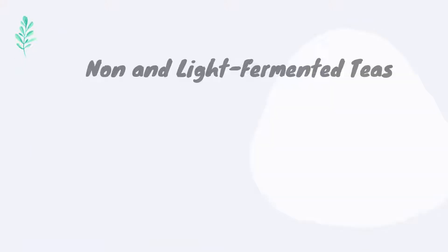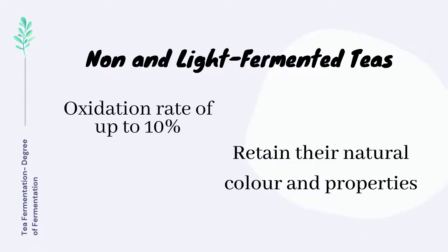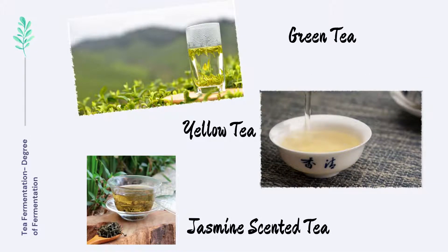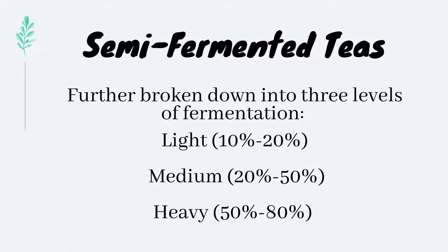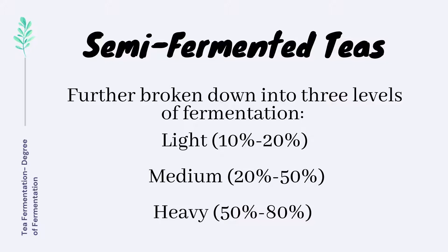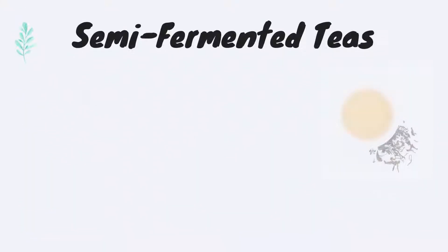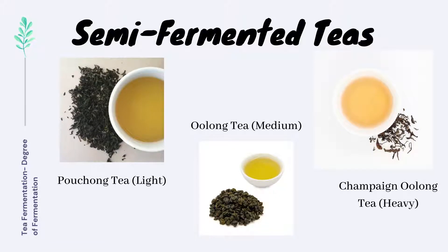Non and light fermented teas have an oxidation rate of up to 10% and retain their natural color and properties. For example, green tea, yellow tea, and jasmine scented tea fall into this category. The next category is semi fermented, which is further broken down into three levels: light (10–20%), medium (20–50%), and heavy (50–80%). This tea has a delicately fragrant aroma and produces a faint yellow to brown tint. Examples would be pouchong tea for light, oolong tea for medium, and champagne oolong for heavy.